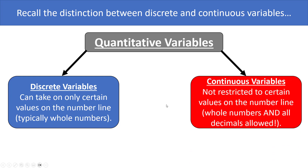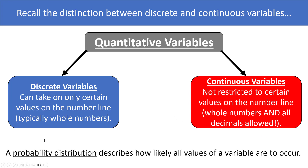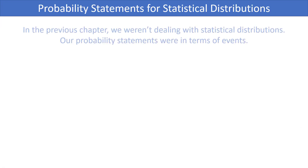Continuous variables, on the other hand, are not restricted to certain values on the number line, meaning that whole numbers and decimals are allowed. In this chapter we talk about discrete probability distributions, and a probability distribution describes how likely all the values of a variable are to occur.